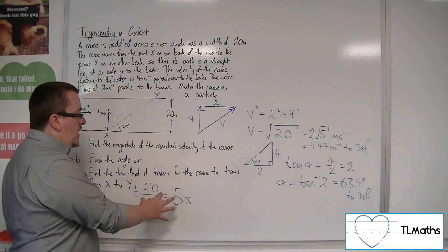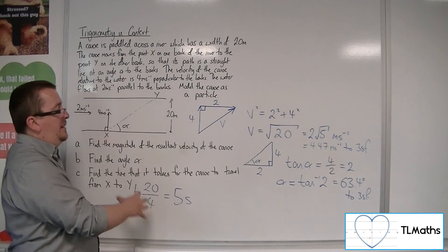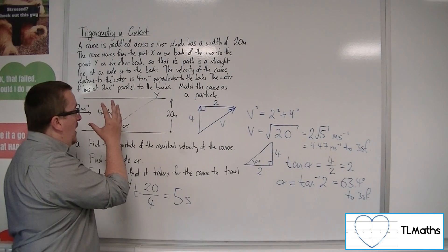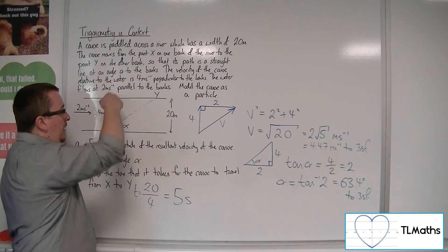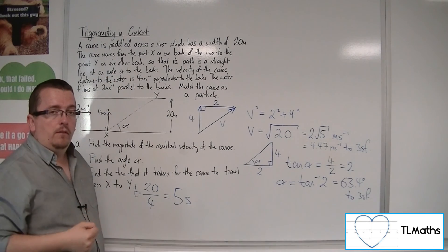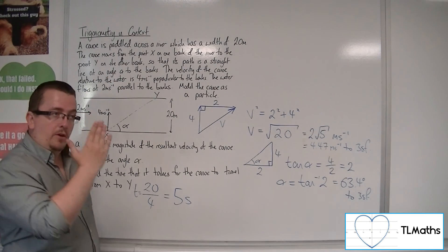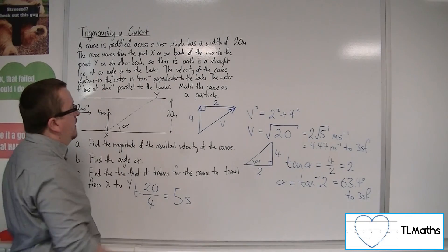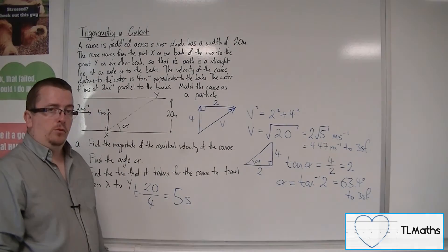So, there are more complicated ways of calculating that, as I described, but because there's no resistance slowing that speed down, going perpendicular to the bank, then it will be just 20 divided by 4.